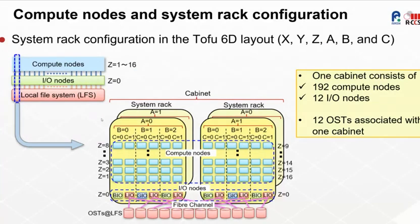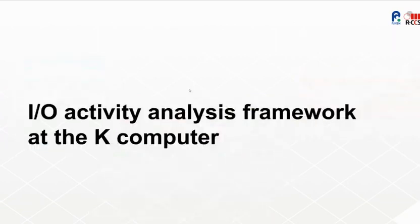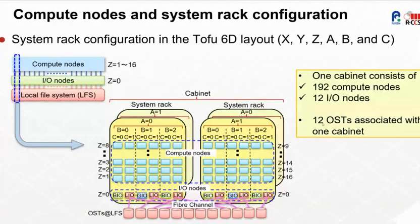The system has a 6D torus layout configuration according to the Tofu interconnect rings. One rack has 96 nodes, and one system cabinet has 192 compute nodes and 12 IO nodes. The system has multiple OSTs per cabinet.